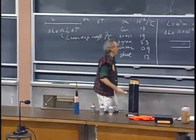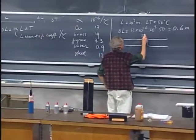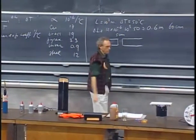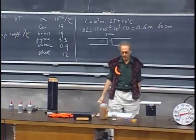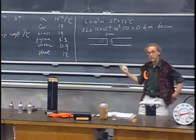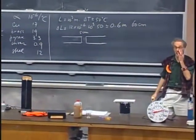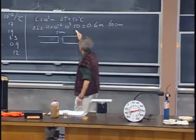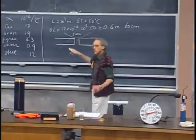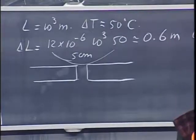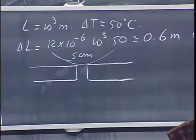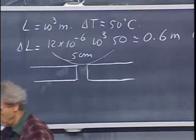If you make these openings, say, five centimeters, then you would need 12 of them in a thousand meters, so every 80 meters you would need a gap. You can hear these gaps when the train goes over them. It's a very typical sound. When the wheel goes over it, you hear a certain click. You can see them and you can hear them, and that's the way they correct for this expansion and contraction.